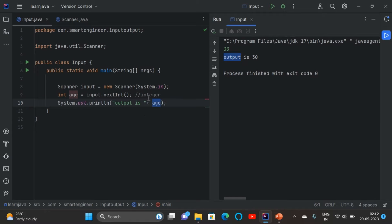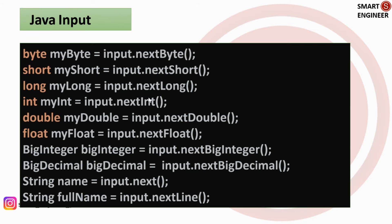Similarly, we can give any type of input: short, long, double, float, BigDecimal, BigInteger, and more. We just need to use the corresponding next method — for short use nextShort(), for long use nextLong().